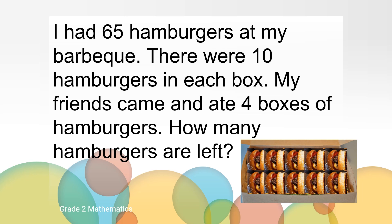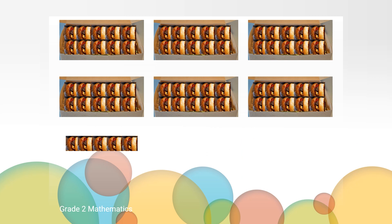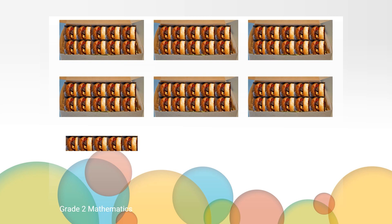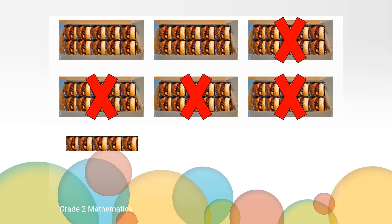Let's come back together and talk about our strategies. Here are the 65 hamburgers we started with. I know the story told us that four boxes of hamburgers were eaten. I know four groups of 10 is 40, so 40 hamburgers were eaten. What equation matches what is happening in this story?